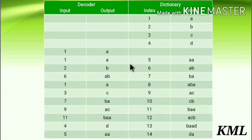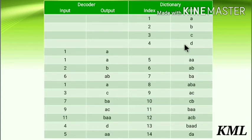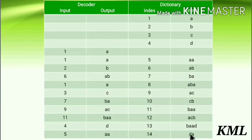Next input is 4. It is already in the dictionary. Enter in the dictionary: prior_string 'baa' plus first symbol of codeword 4, which is 'd', so we get 'baad'. Increment index and output string of codeword 4, which is 'd'. Next input is 5. It is already in the dictionary. Enter in the dictionary: prior_string 'd' plus first symbol of codeword 5. String of 5 is 'aa', first symbol is 'a', so we get 'da'. Increment index and output string of 5, which is 'aa'. Your input is now fully processed.